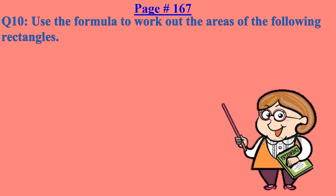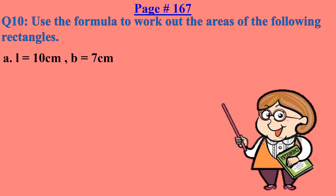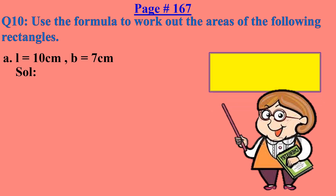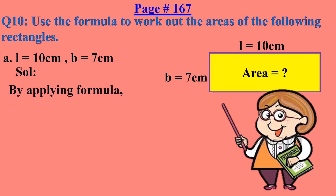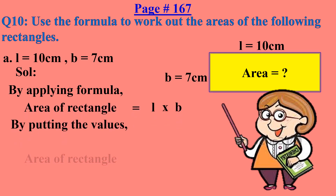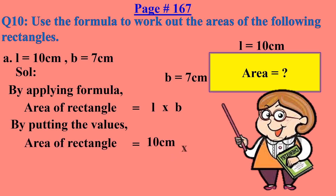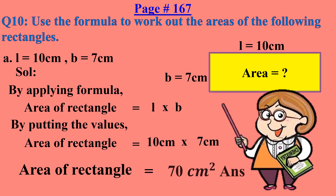Open page number 167. We will solve question number 10, part A: Use the formula to work out the areas of the following rectangles. L is given as 10 centimeters, B is given as 7 centimeters. I am going to draw a rectangle here. L equals 10 centimeters (horizontal), B equals 7 centimeters (vertical). Area is the colored inner part of the shape. Applying the formula: area of a rectangle equals L into B. Putting in the values: 10 cm into 7 cm equals 70 centimeters square.